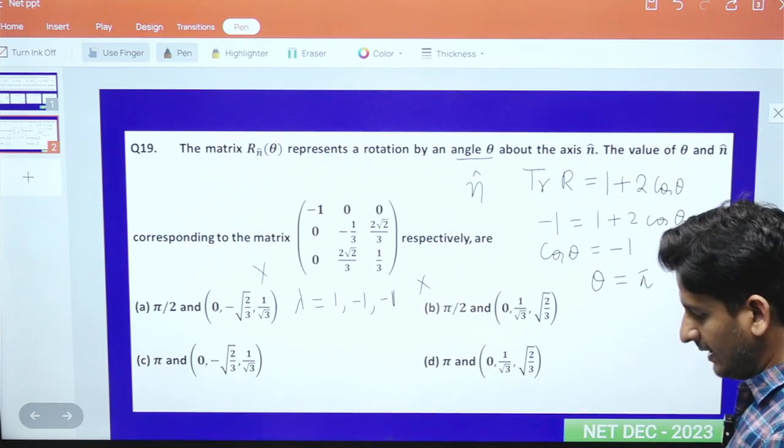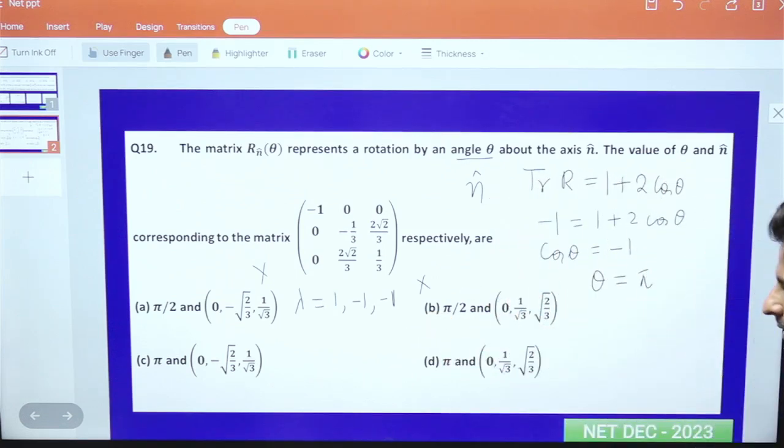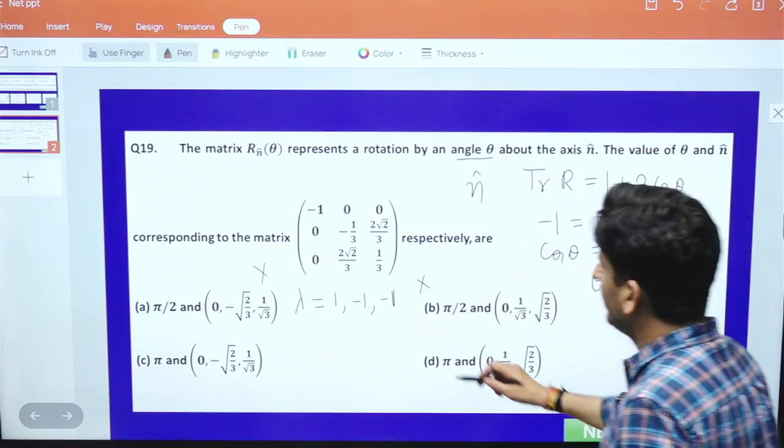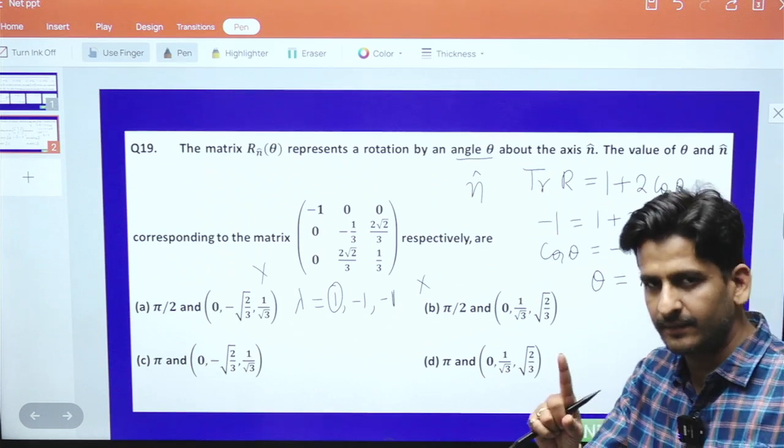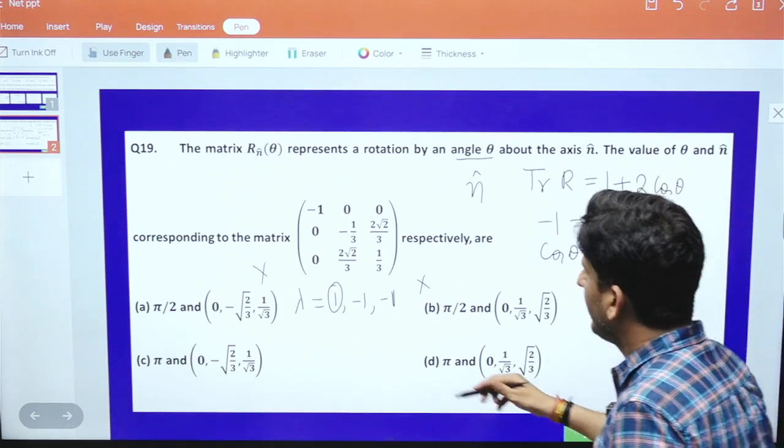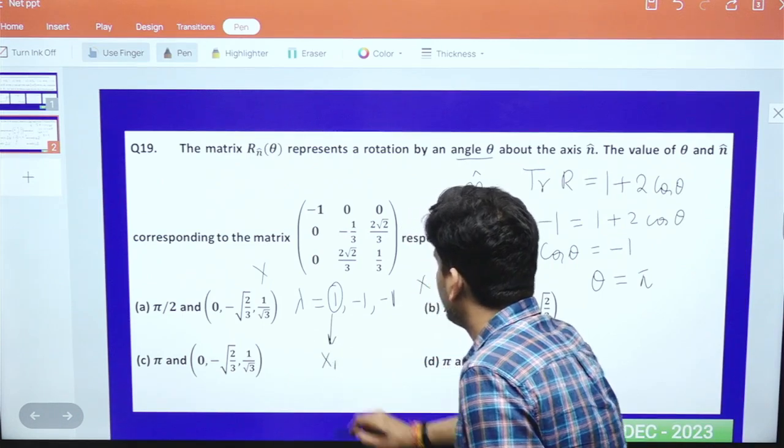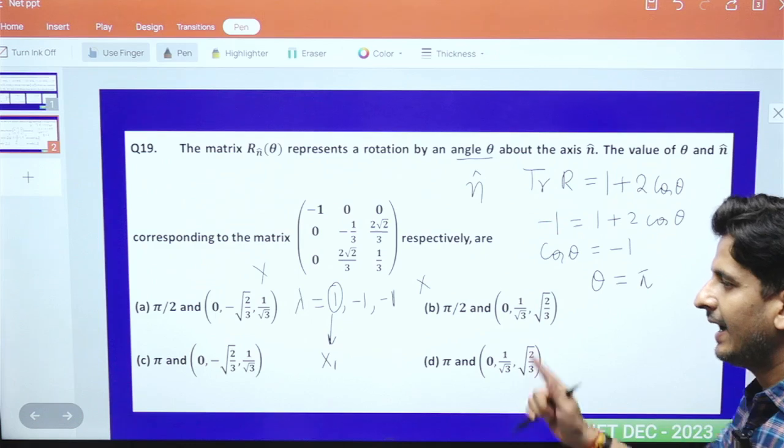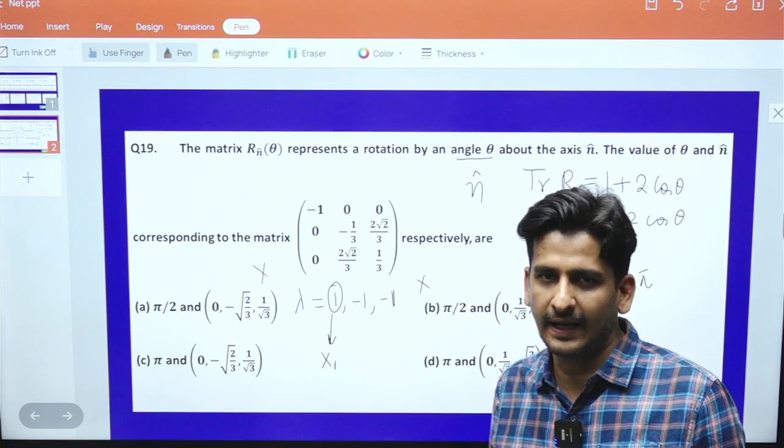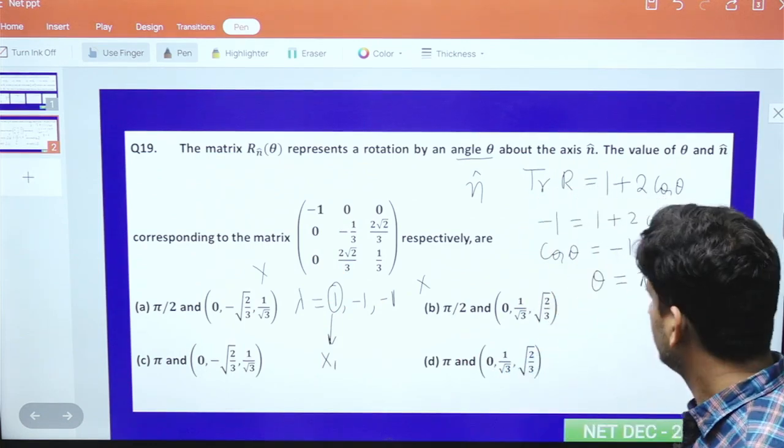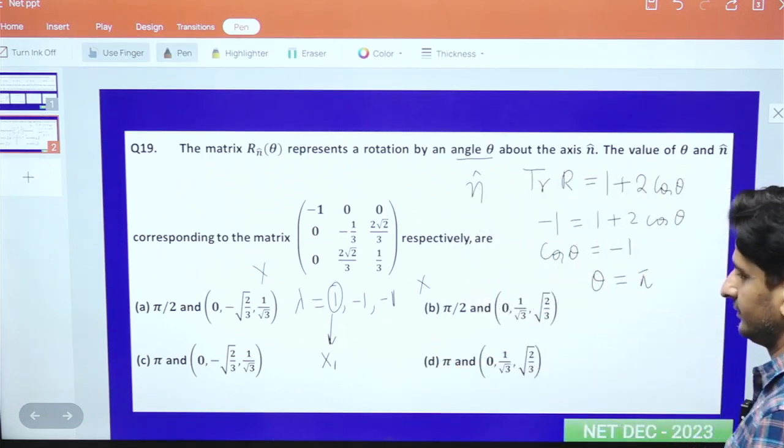One eigenvalue for a rotation matrix will be 1, and the eigenvector corresponding to this eigenvalue is the axis about which rotation happened. Calculate the eigenvector corresponding to eigenvalue 1, and that will give you the vector about which rotation has taken place.